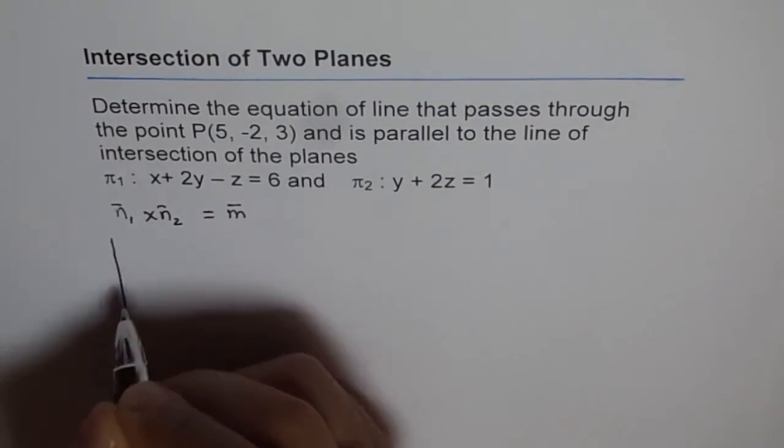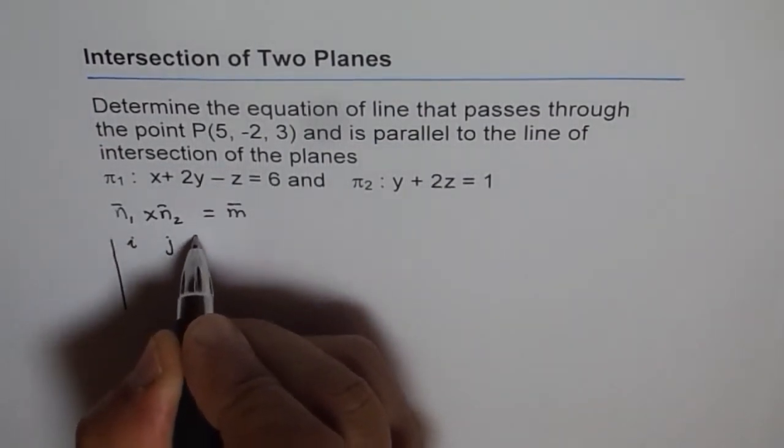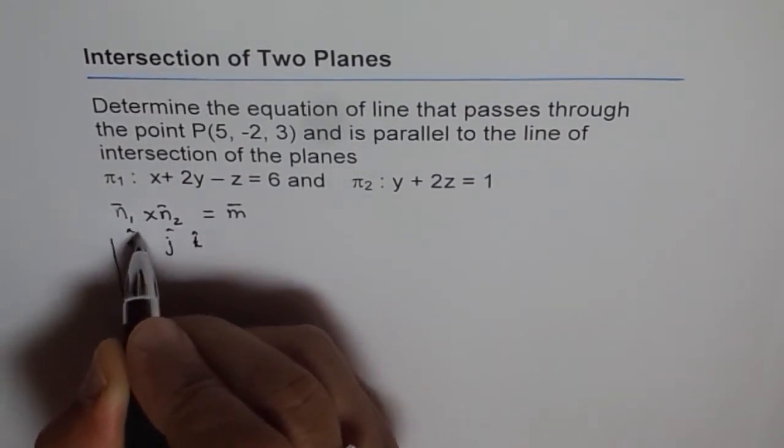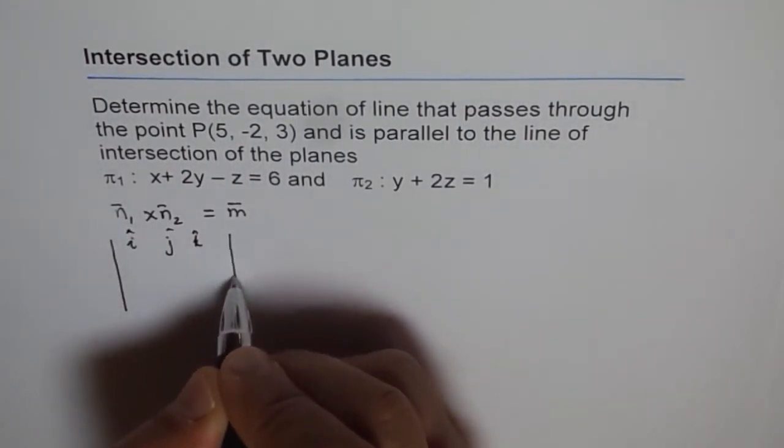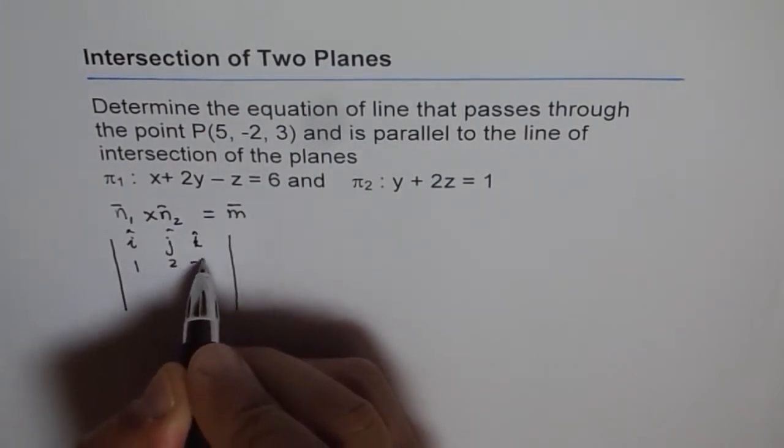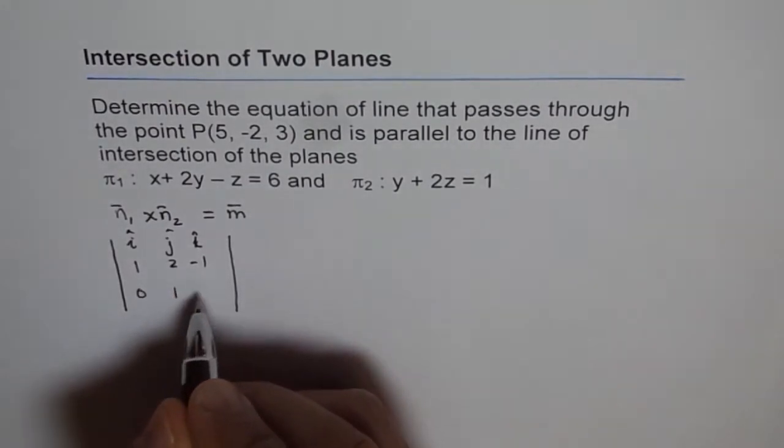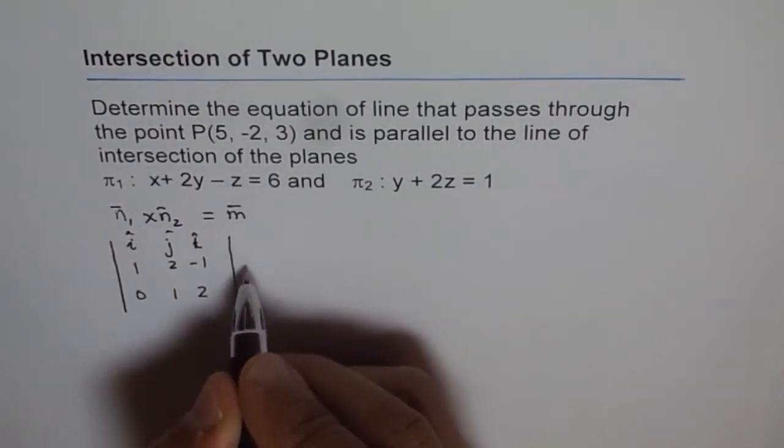Again we will use the matrix. So we get i, j, k as unit vectors in the three directions and here we have 1, 2, -1 and here we have 0, 1, and 2. And let's solve for this.